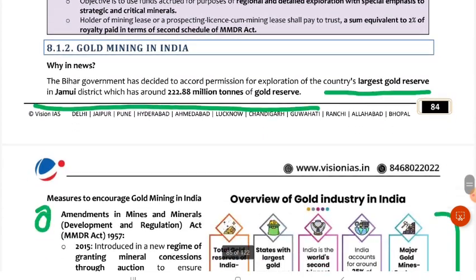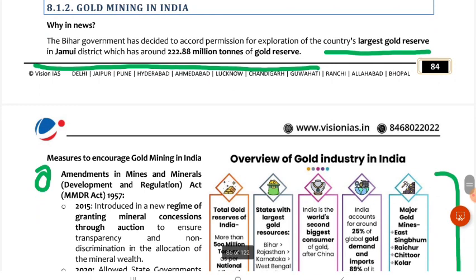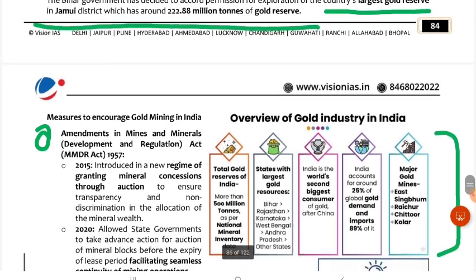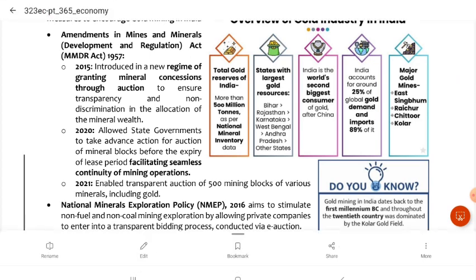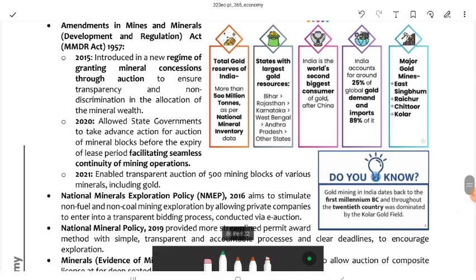Next is gold mining in India. The Bihar government decided to give permission to explore the largest gold reserve in Jamui district — approximately 222.88 million tons of gold reserve. Now, what are the measures to improve gold mining in India? Our gold industry has not been getting enough attention, so we need to understand why we are encouraging gold mining.